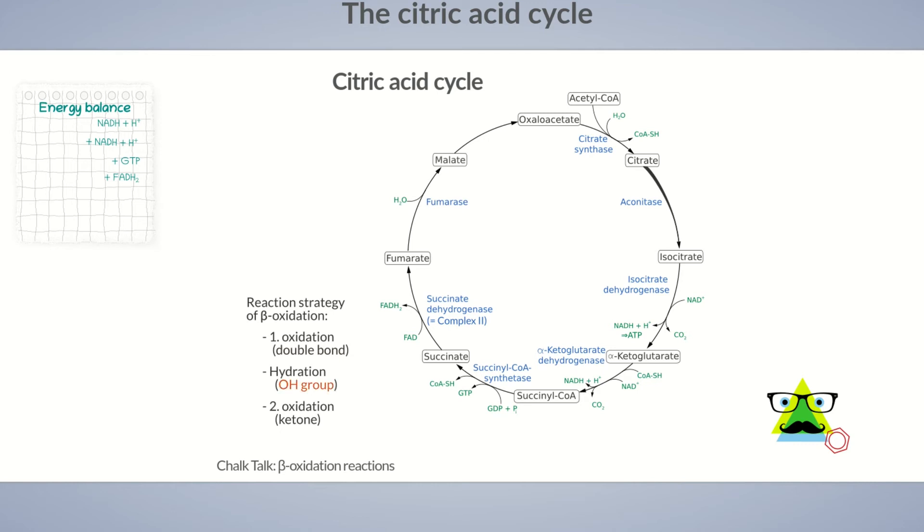This alcohol group is oxidized by malate dehydrogenase to a ketone during the last reaction of the citric acid cycle. With that, oxaloacetate is recovered, closing the cycle. The 2 electrons and 2 protons released during the final oxidation are again used to generate NADH and H+, which we'll also add to the energy balance.